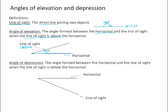So whenever your line of sight lies above your horizon, then you're looking up towards your line of sight, that is an angle of elevation.